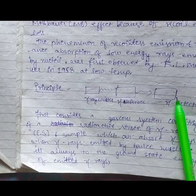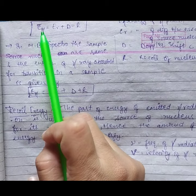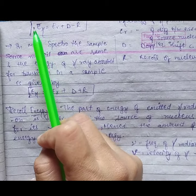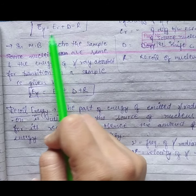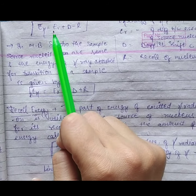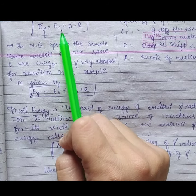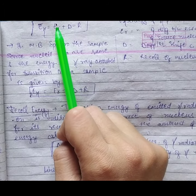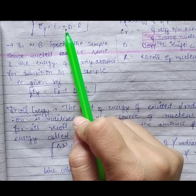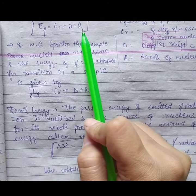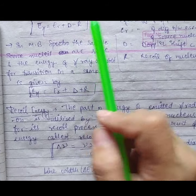E gamma is the energy of gamma photon. E R is the energy difference between excited state and ground state of the source nucleus. D is Doppler shift, R is recoil of nucleus. I know you may not understand recoil nucleus, we will discuss recoil energy next.